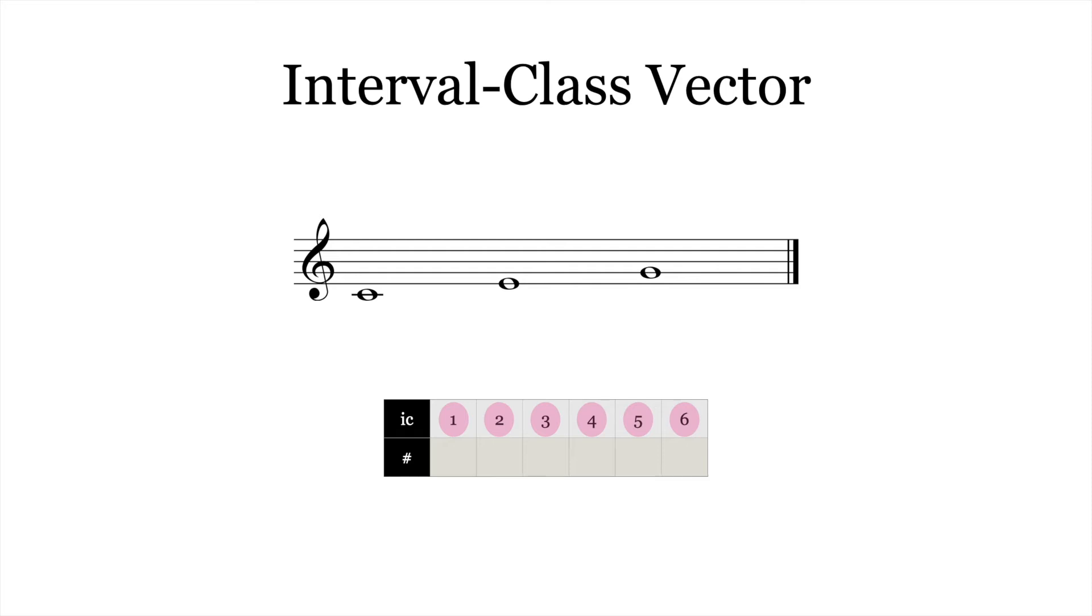Consider the following C major triad, which contains one instance of interval class four, one instance of interval class three, one instance of interval class five, and zero instances of interval classes one, two, and six, resulting in the following vector when placed in tabular form.